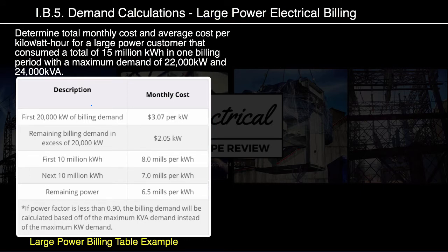So this problem says: determine the total monthly cost and average cost per kilowatt hour, just like we've done so far, for a large power customer that consumed a total of 15 million kilowatt hours in one billing period with a maximum demand of 22,000 kW and 24,000 kVA. Right off the bat, you'll notice instead of having the maximum demand in kilowatts and the power factor, now we've got two separate maximum demands, both in kilowatts and kVA.